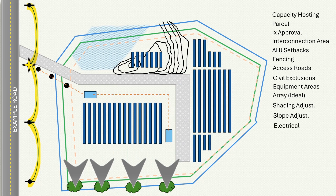Our last step will be electrical design. Obviously this is a really simple schematic, but electrical design is very involved for a utility scale project, including medium voltage conductors from equipment pad to equipment pad and at the interconnection area, as well as throughout the array.